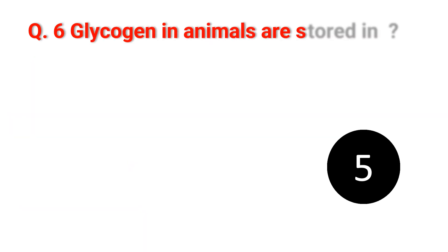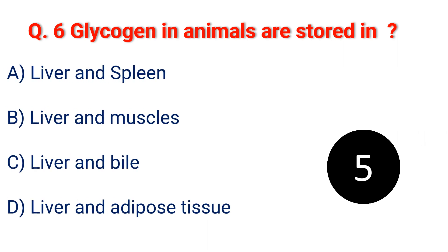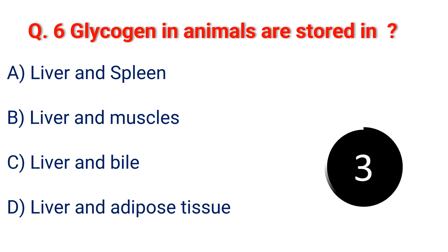Question 6. Glycogen in animals is stored in: A. Liver and spleen. B. Liver and muscle. C. Liver and bile. D. Liver and adipose tissue. The answer is B. Liver and muscle.